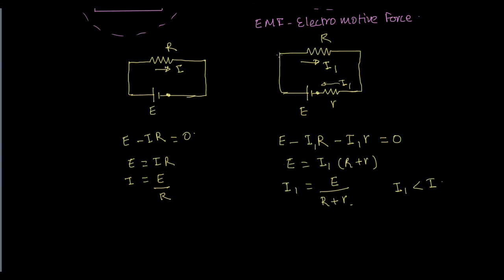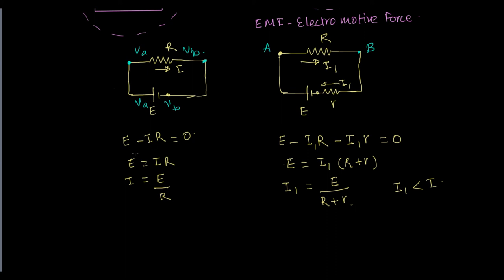Now what voltage is obtained across this resistance R is not the same as what you got in this case. If this was Va and this was Vb, then this Va traveled all the way here, so we see that the potential across this resistor was the same as E. So here the potential across the resistor is E. Now let's try to understand what the potential here is.